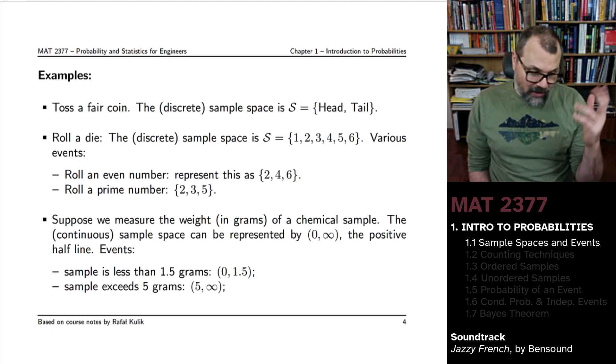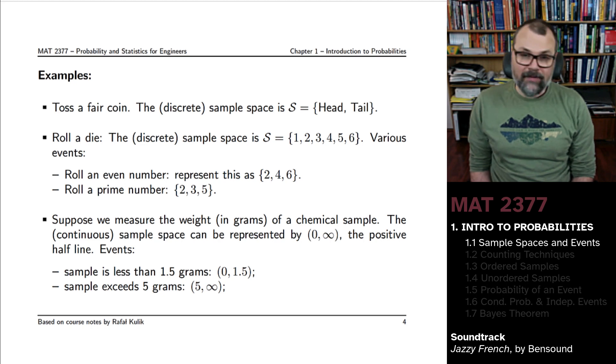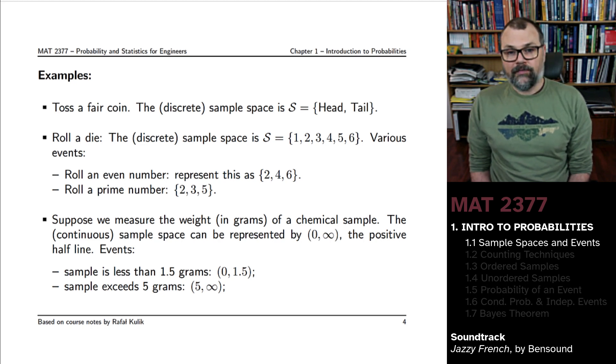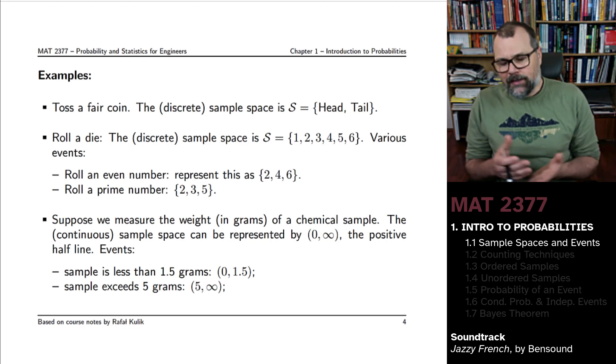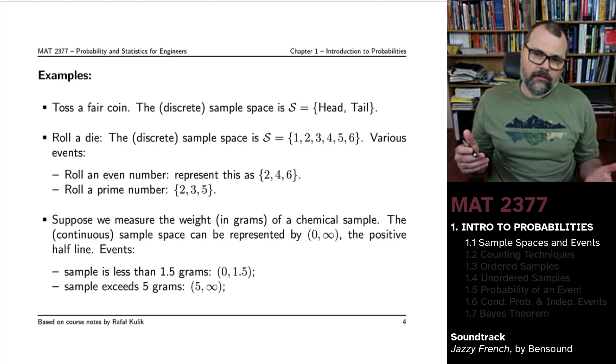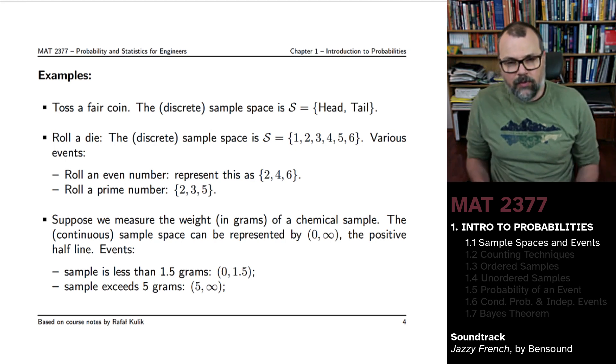I know some of you might have experience playing games where you have dies that don't necessarily have only six sides. You would replace the set of outcomes based on the kind of die you're working with.